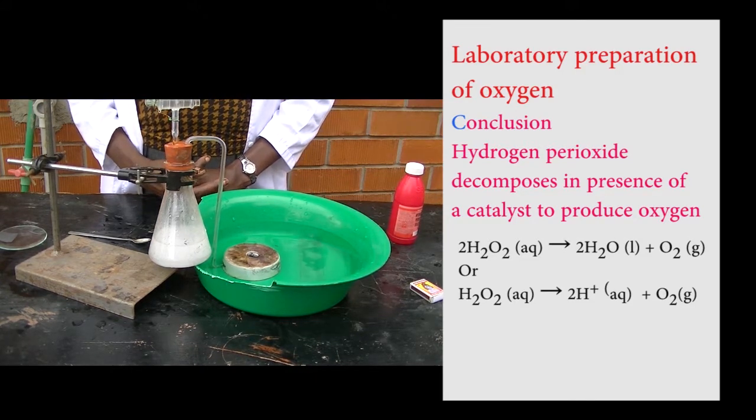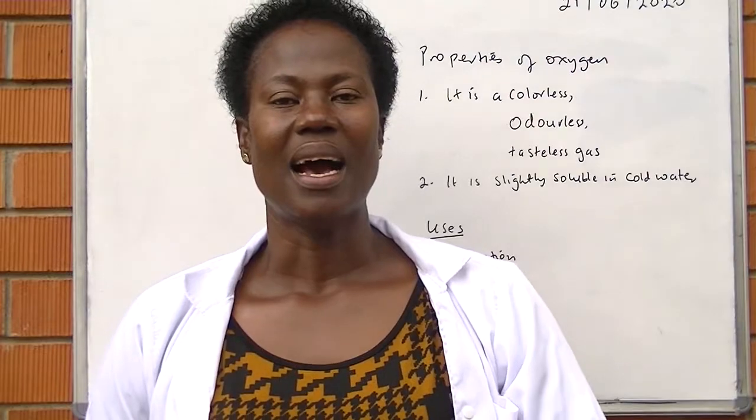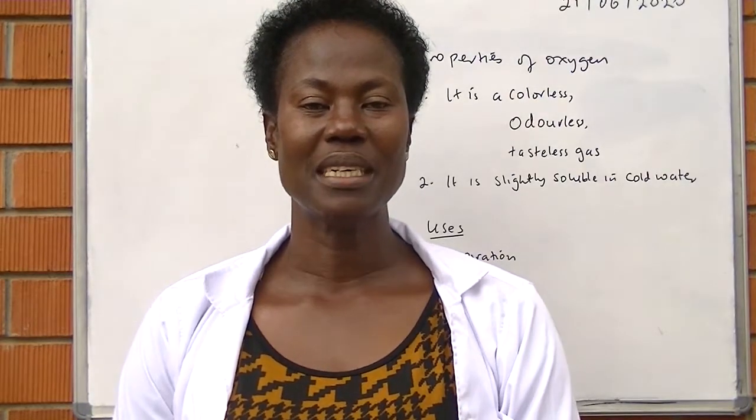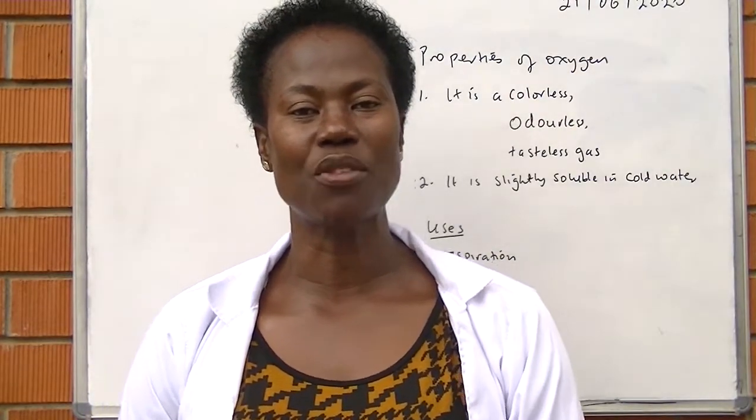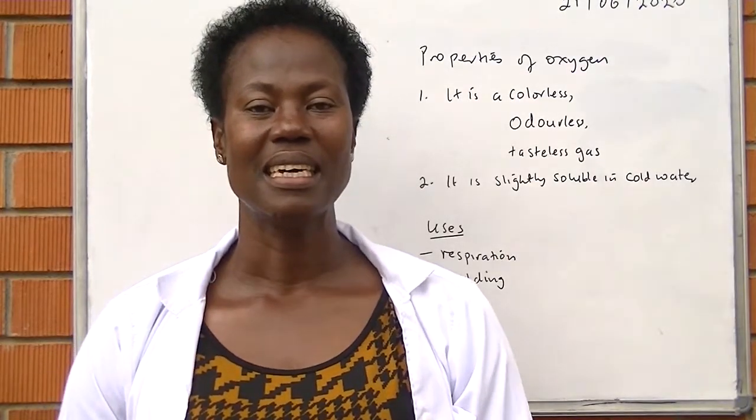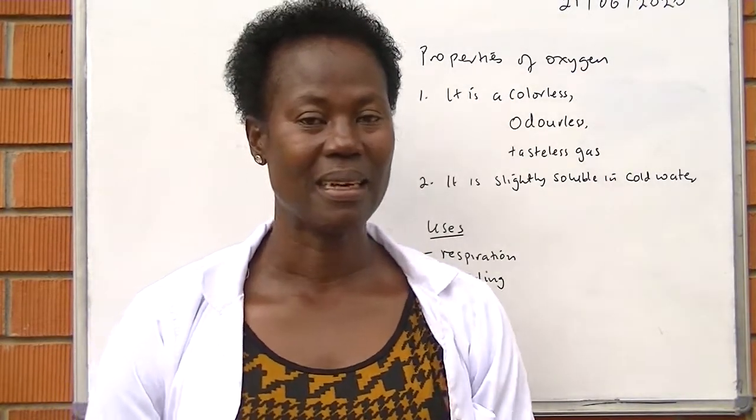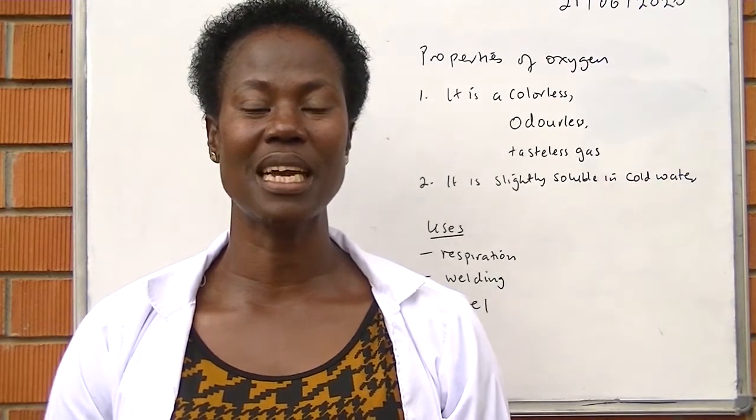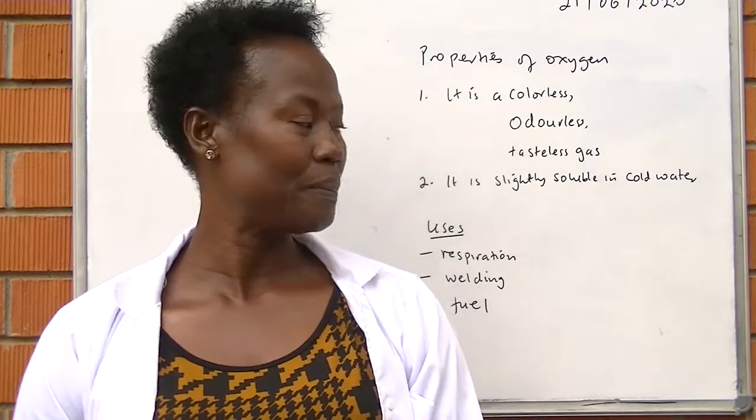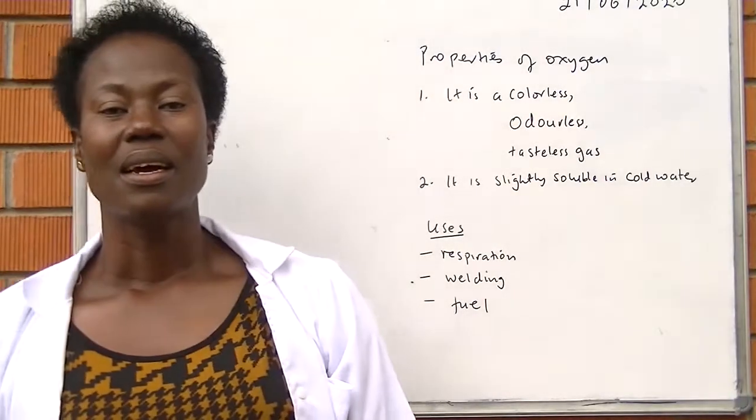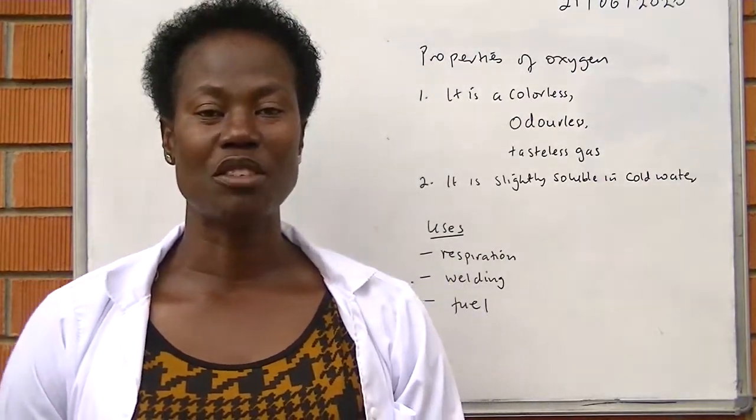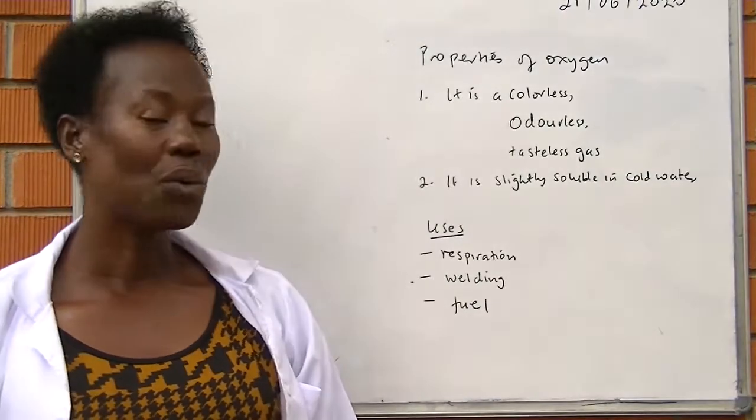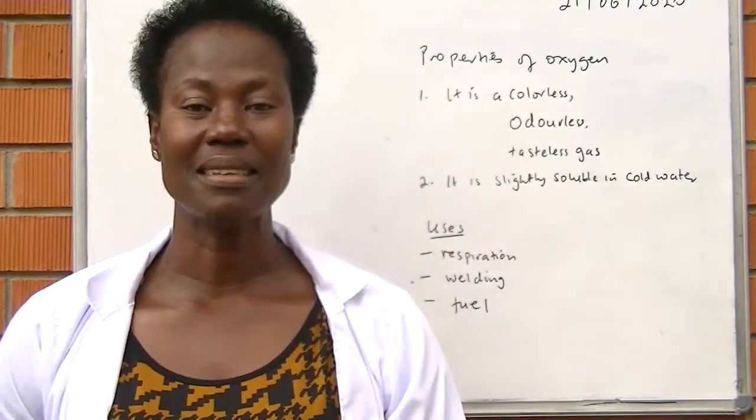As you have seen from the experiment, we can now generate the properties of oxygen. Oxygen is colorless, tasteless, and odorless. It is slightly soluble in water. For example, fish uses dissolved oxygen which is in the lake water. Uses: Oxygen finds application in respiration, welding, and it can be used as a fuel.